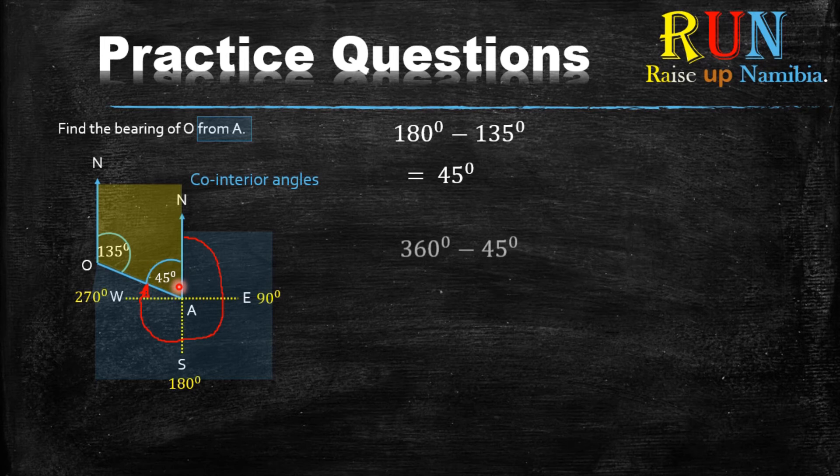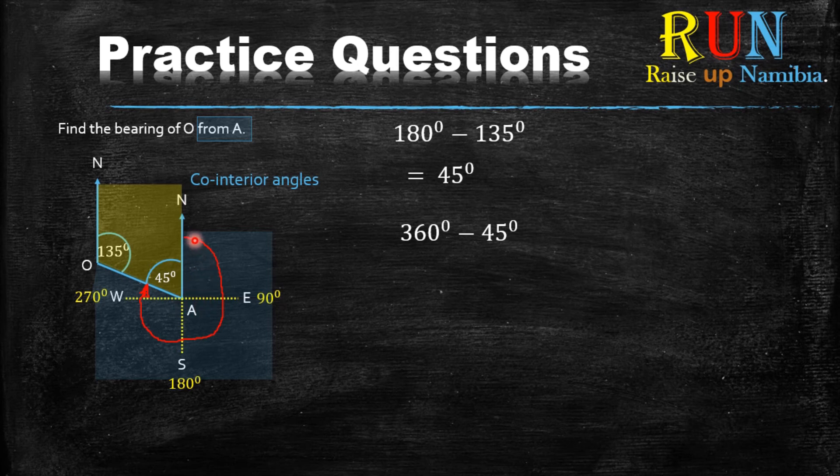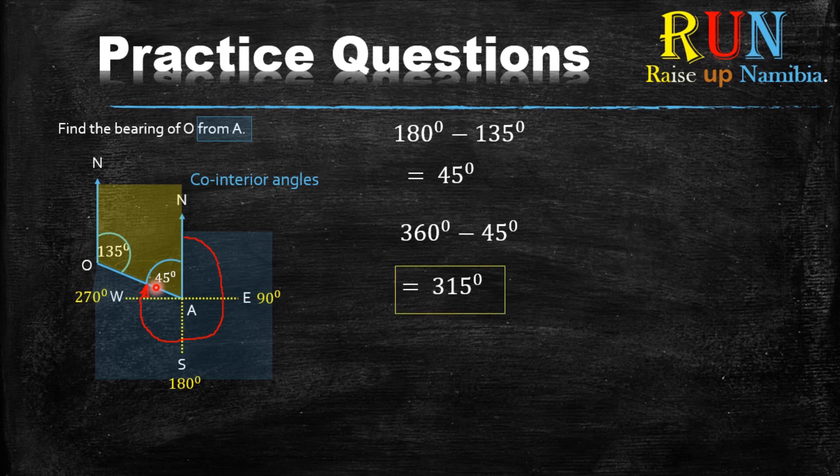Now if that answer is this angle, which is like 45, you say 360 minus the 45. Why is it 360 minus 45? Because basically from the north in front here, if you go in a full circle until the north behind here is like a revolution which is 360.